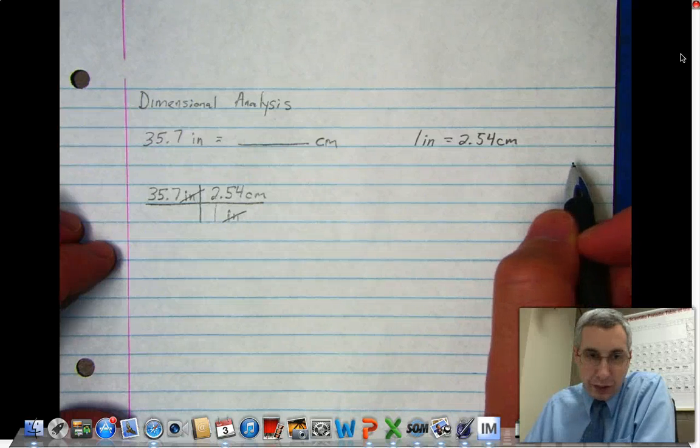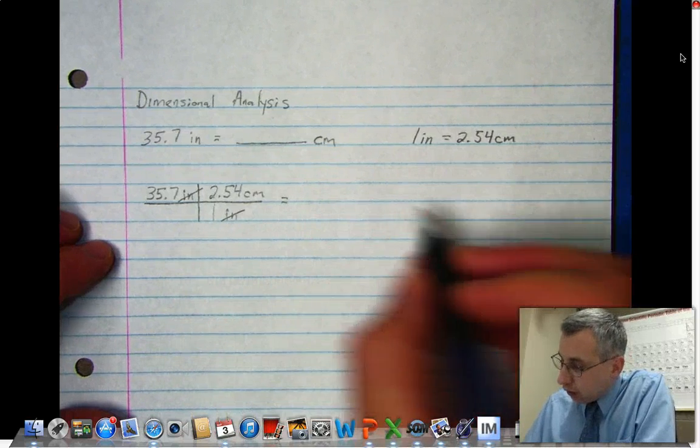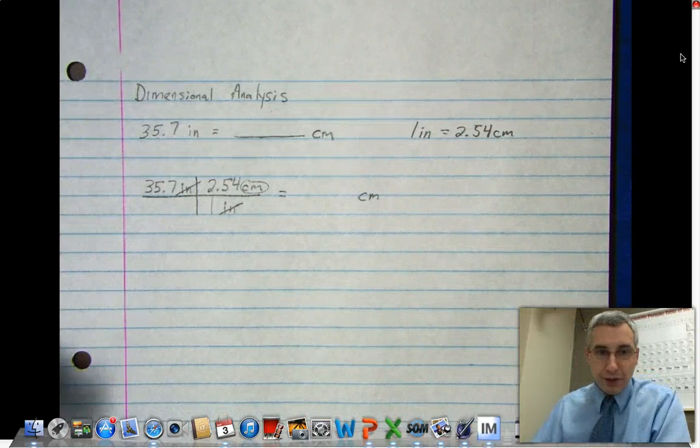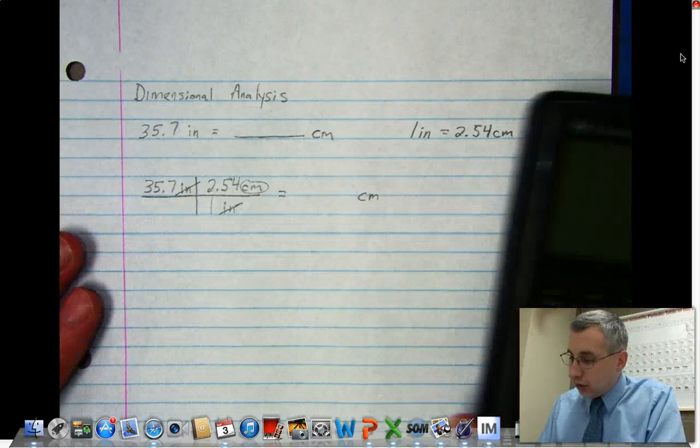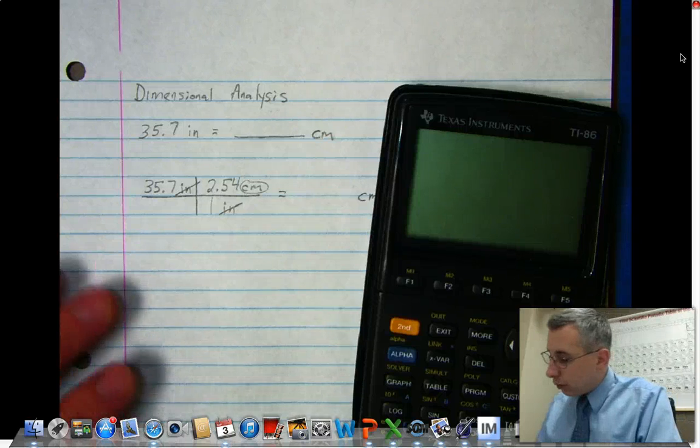The one on the top is like being in the numerator, the one on the bottom is the denominator. They cancel out like in math class. That leaves me with centimeters as the remaining unit, which is good. Now I need to do the calculation.